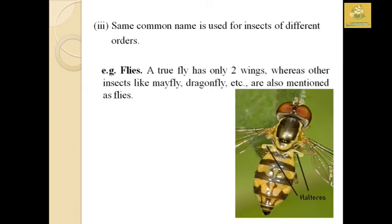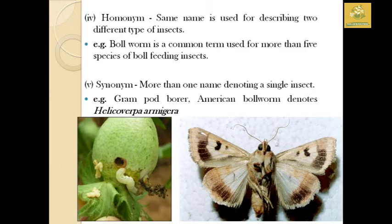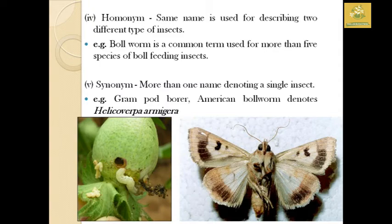The same common name is used for insects of different orders — for example, 'fly': a true fly has only two wings, yet mayfly and dragonfly are also called flies. A homonym is when the same name describes two different types of insects — for example, 'bollworm' is used for more than five species of bollworm-feeding insects. A synonym is when more than one name denotes a single insect — for example, gram pod borer and American bollworm both refer to Helicoverpa armigera.